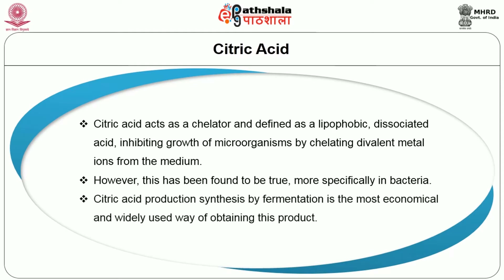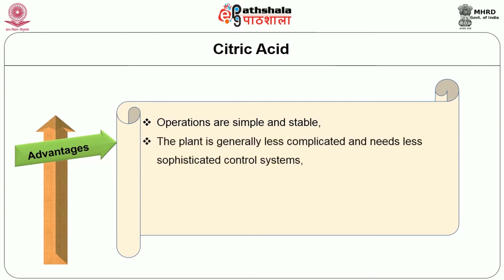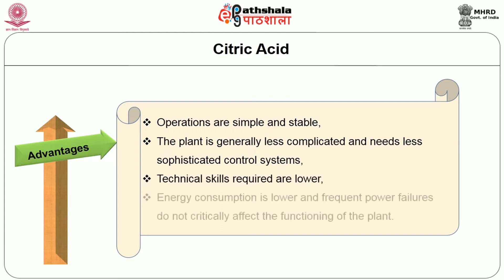Citric acid production by fermentation is the most economical and widely used way of obtaining this product. More than 90% of the citric acid produced in the world is obtained by fermentation, which has its own advantages: operations are simple and stable, the plant is generally less complicated and needs less sophisticated control systems, technical skills required are lower, energy consumption is lower, and frequent power failures do not critically affect the functioning of the plant.